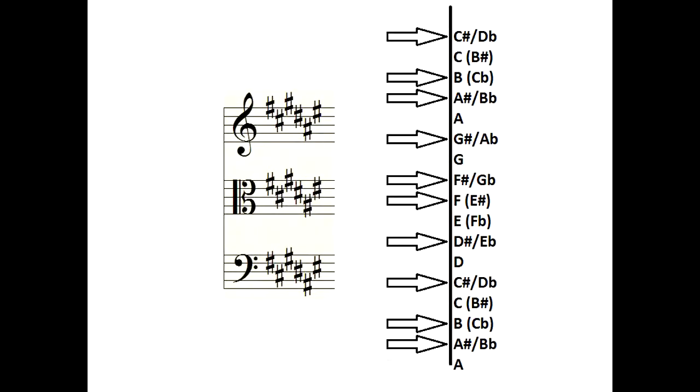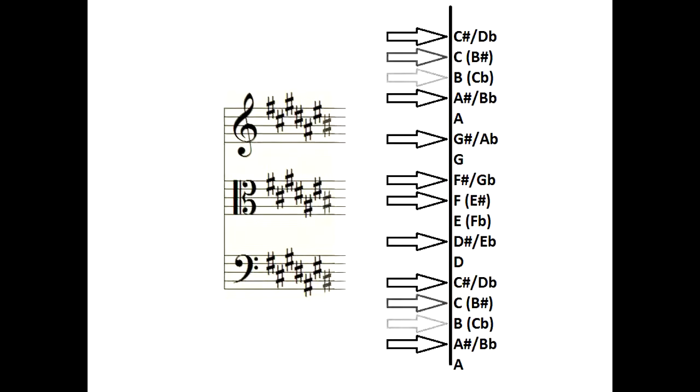If we add a key signature, it creates half steps between two sharp notes. That's E sharp to F sharp, and B sharp to C sharp.